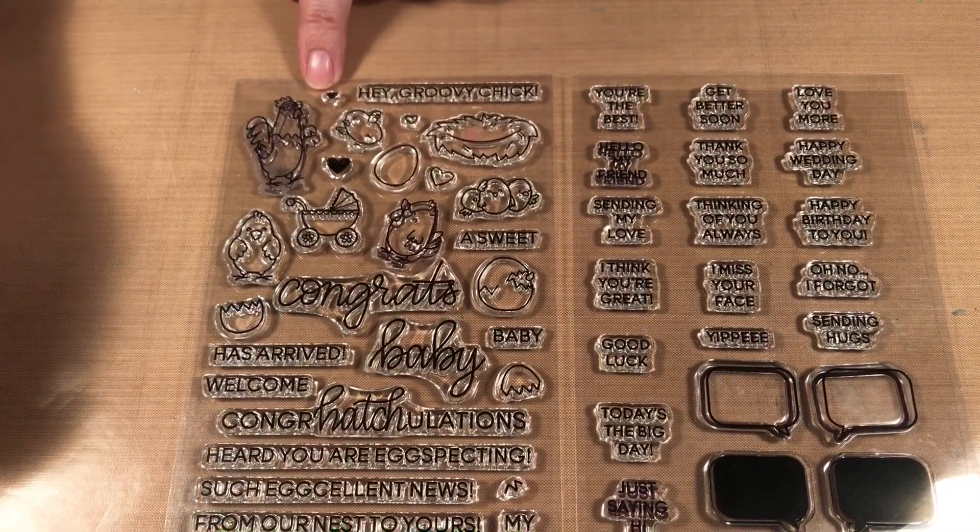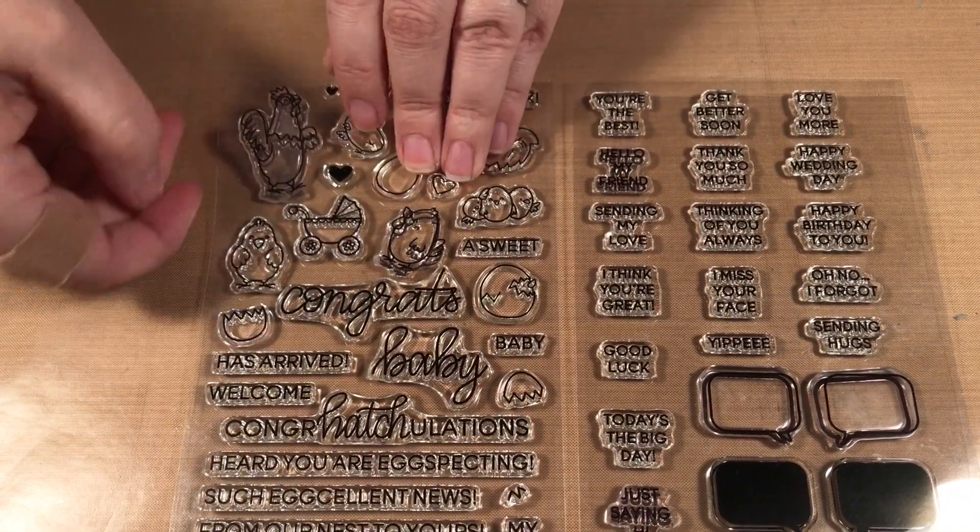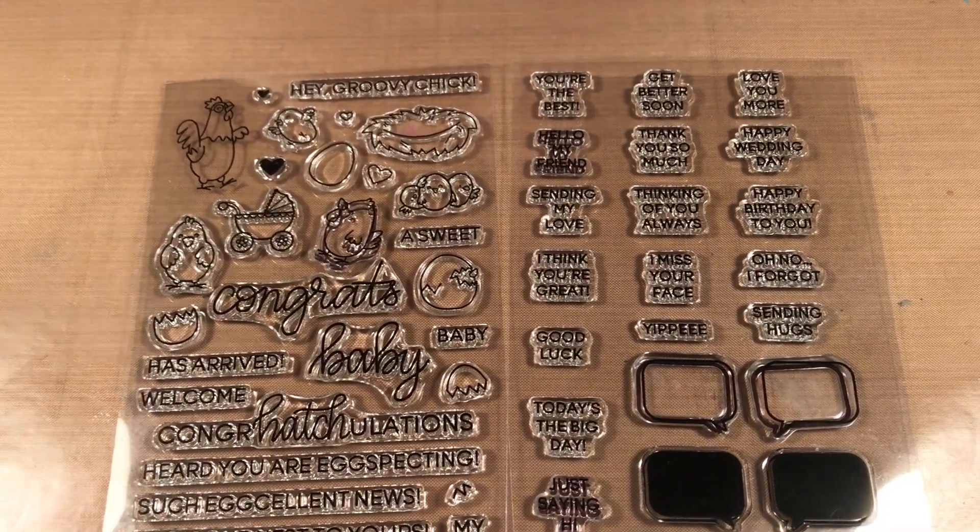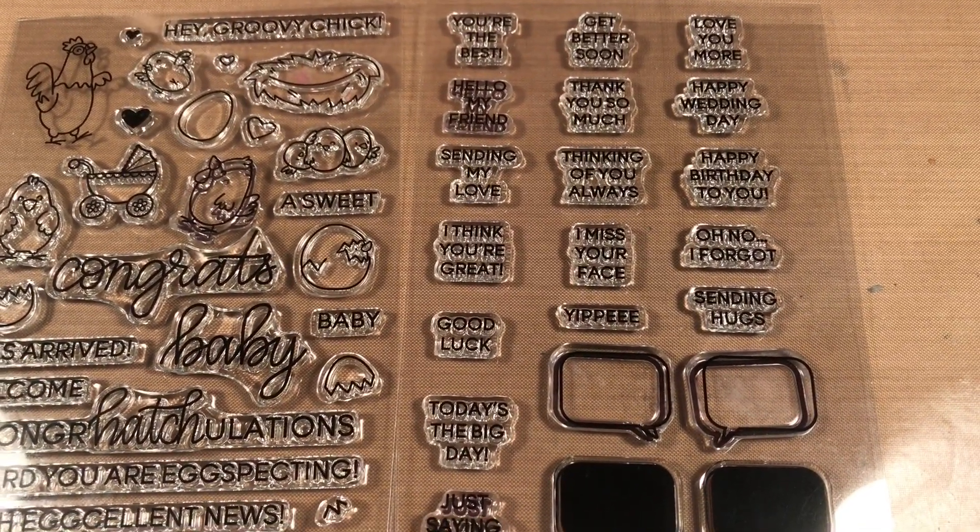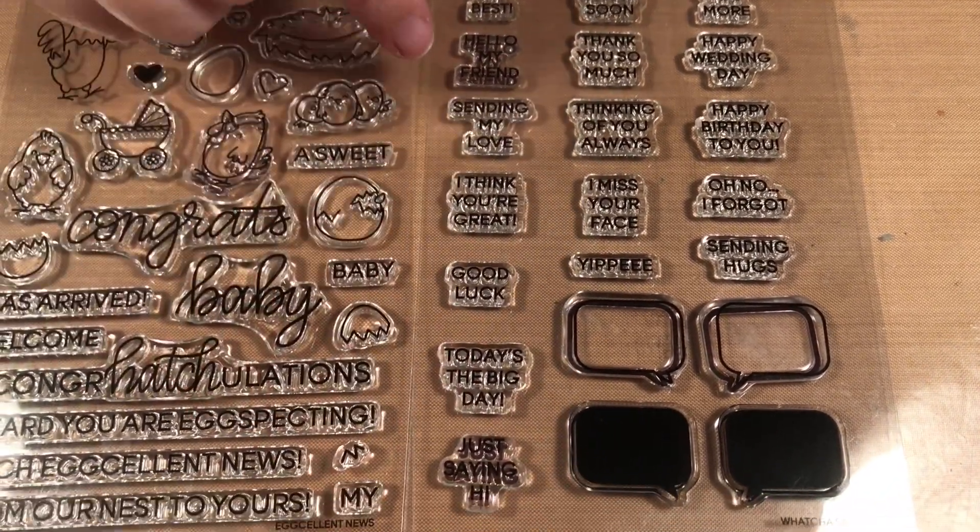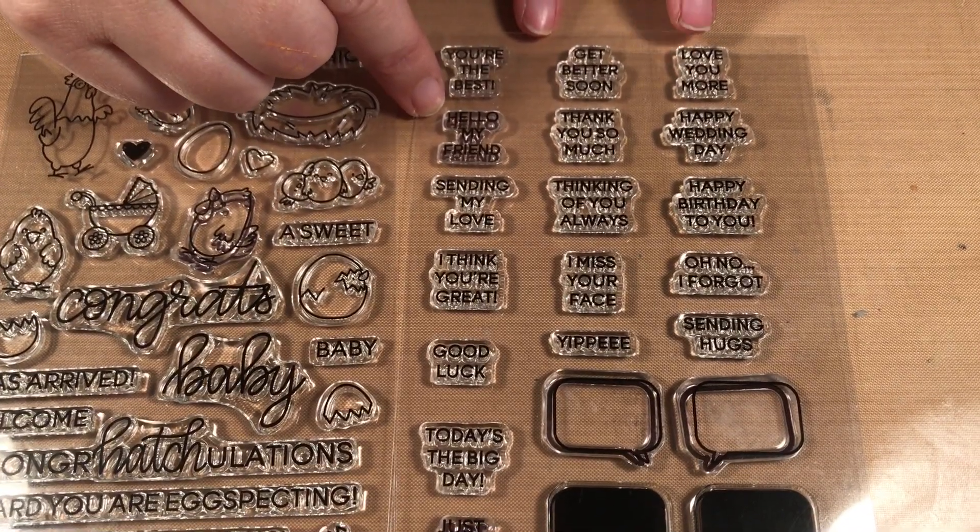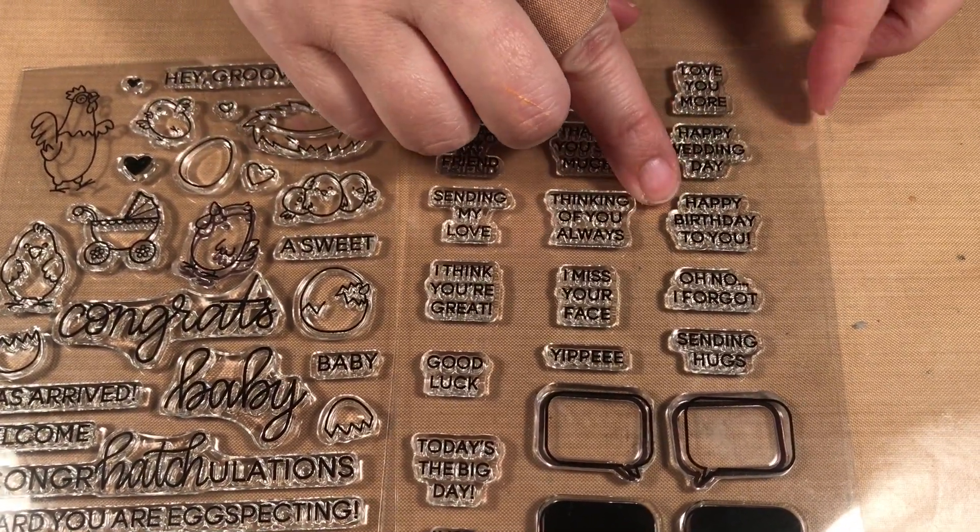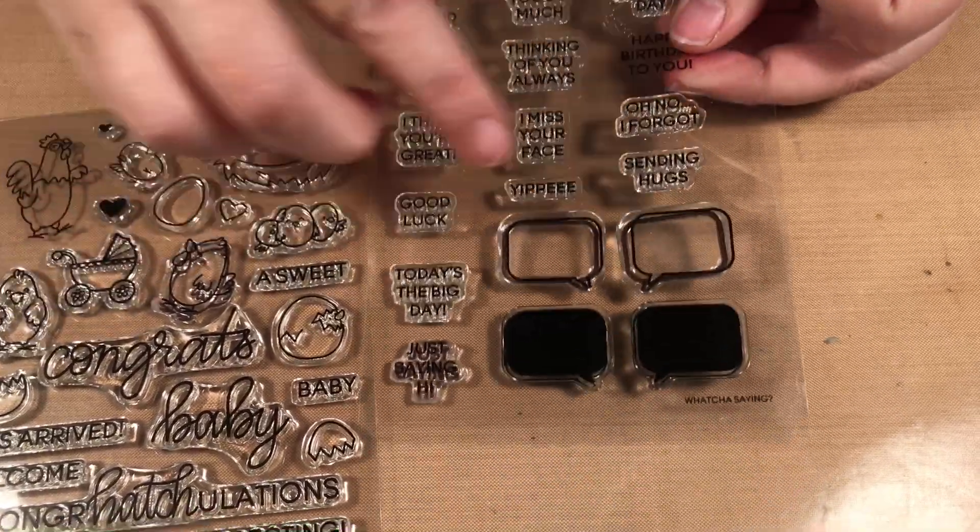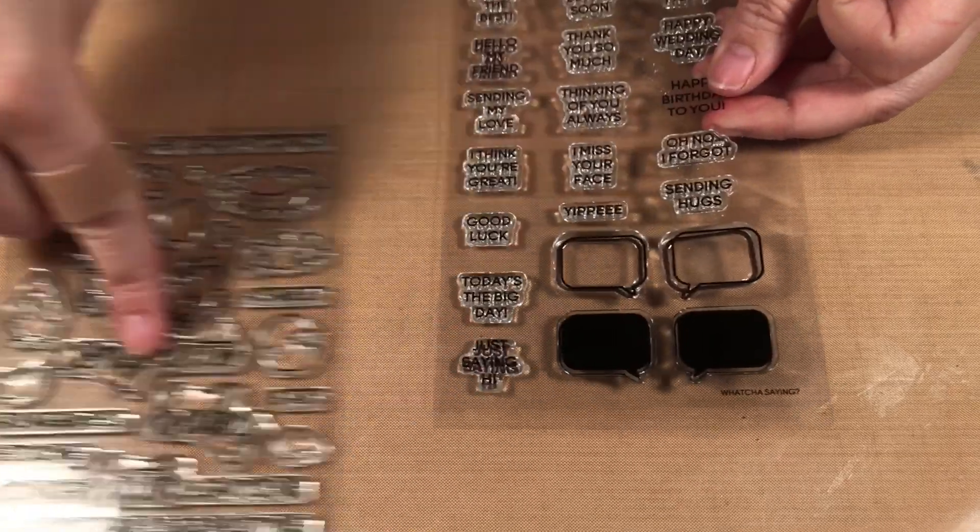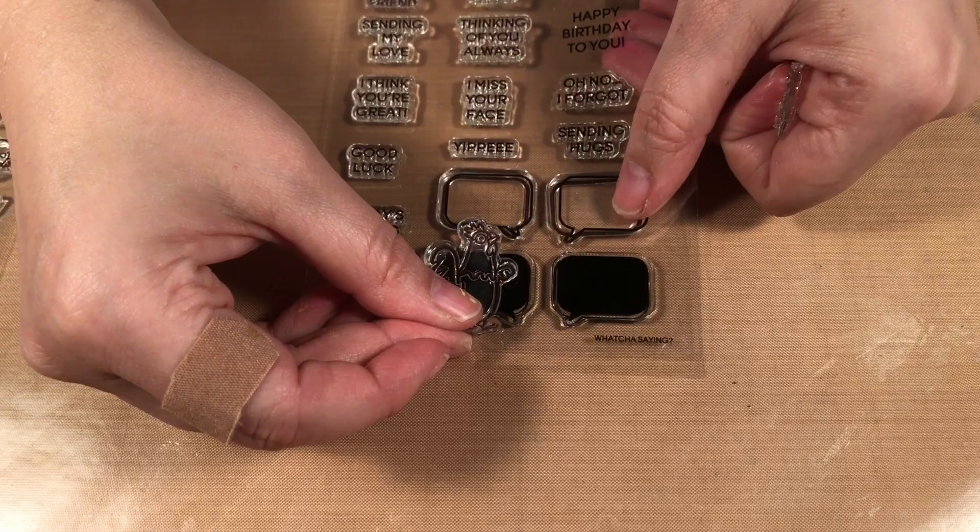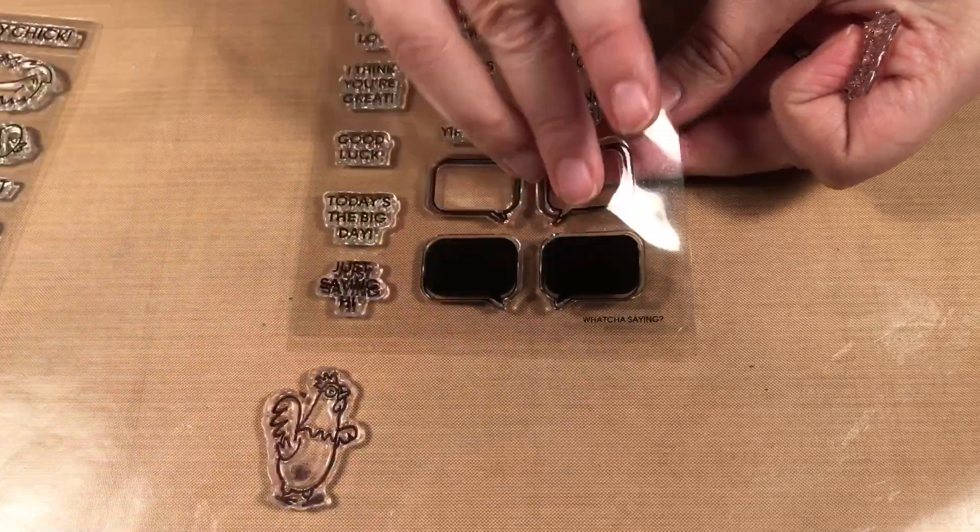I'm going to use this little rooster guy again and I'm going to use a saying. Last time I used just saying hi and hello my friend, and so this time I think I'm going to do happy birthday to you. You can see the little word phrases here go both directions, so if he's here then this is the side I need for the word phrase.